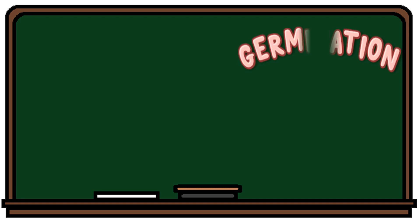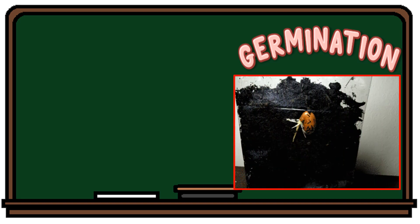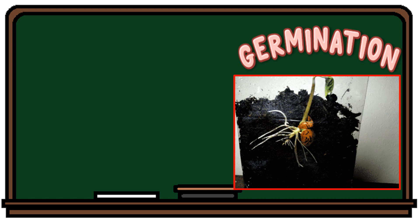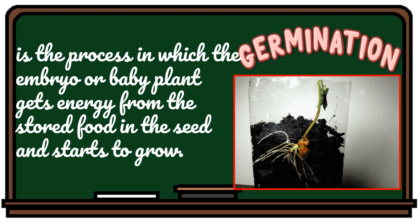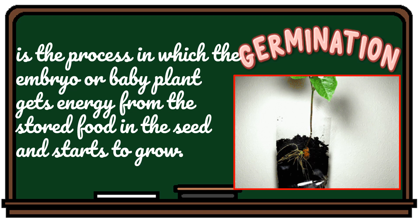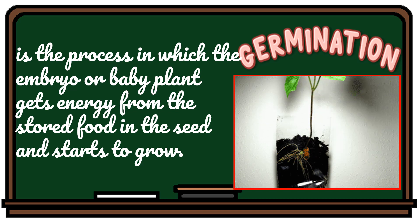Class, what do we mean by the word germination? Let us look at the picture and observe. Germination is the process in which the embryo, or baby plant, gets energy from the stored food in the seed and starts to grow.